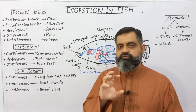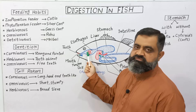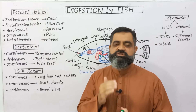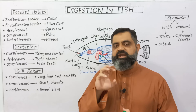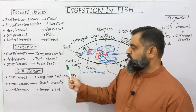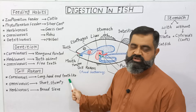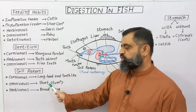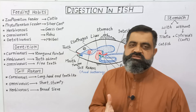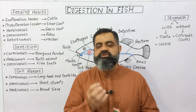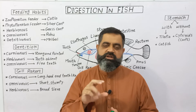Some fish also have a tongue, which is usually non-muscular and only helps in grasping food. The mouth leads into the oral cavity, which leads into the pharynx. The pharynx has gill rakers — filamentous structures associated with the gills used for filtering and gathering food particles from the passing water. Carnivorous fish have long, hard, tooth-like gill rakers; omnivorous fish have short and stumpy gill rakers; herbivorous fish have broad, sieve-like gill rakers.